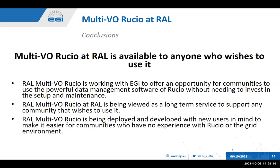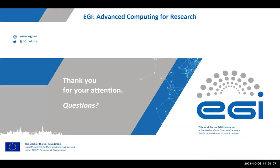In conclusion, Multi-VO Ruscio at RAL is available for anyone who wishes to use it — someone who may already be interested in Ruscio and setting up their own instance, or an experiment that does want to use Ruscio for their data management needs. We're working with EGI to provide this software to the EGI community. It's being viewed as a long-term service, so this isn't going to disappear anytime soon. And we're trying to deploy and develop it with new users in mind who might not have much experience with Ruscio or the grid environment. Thank you, and do you have any questions?